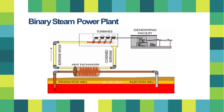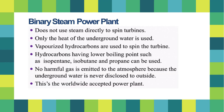The binary steam power plant does not use steam directly to spin turbines; only the heat of the underground water is used. Vaporized hydrocarbons are used to spin the turbine, with hydrocarbons having lower boiling points such as isopentane, isobutane, and propane. No harmful gas is emitted to the atmosphere because the underground water is never exposed to the outside. This is the worldwide accepted power plant.